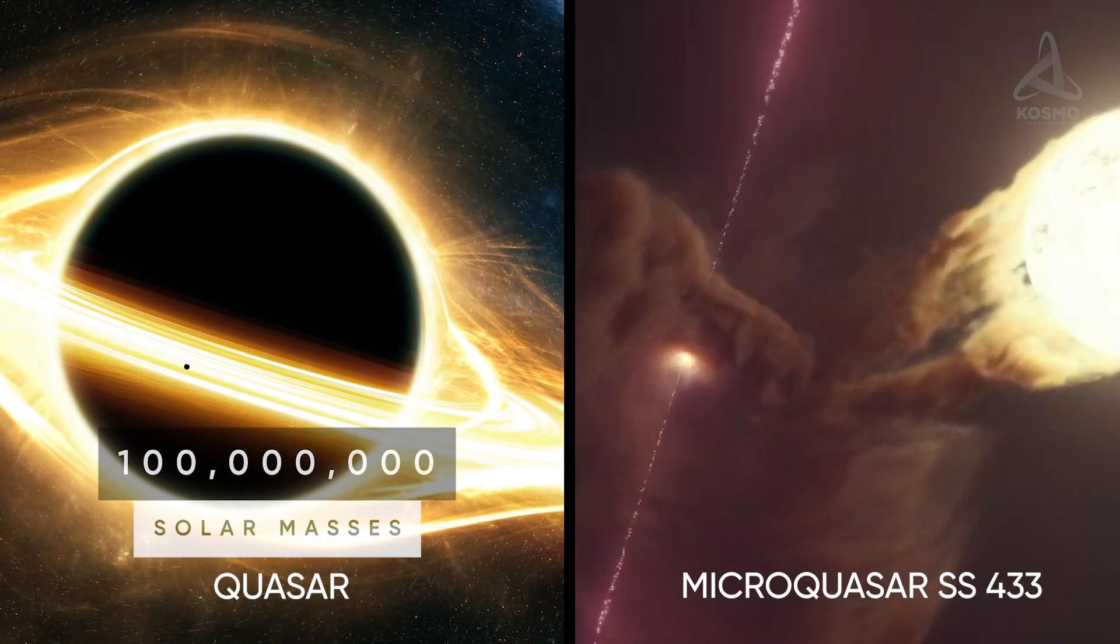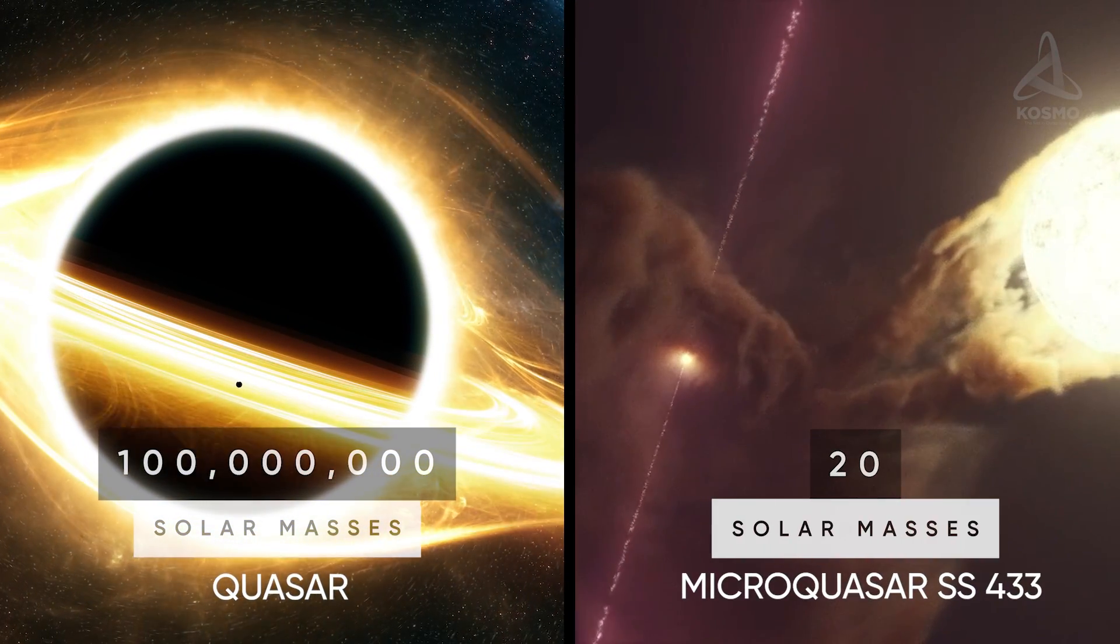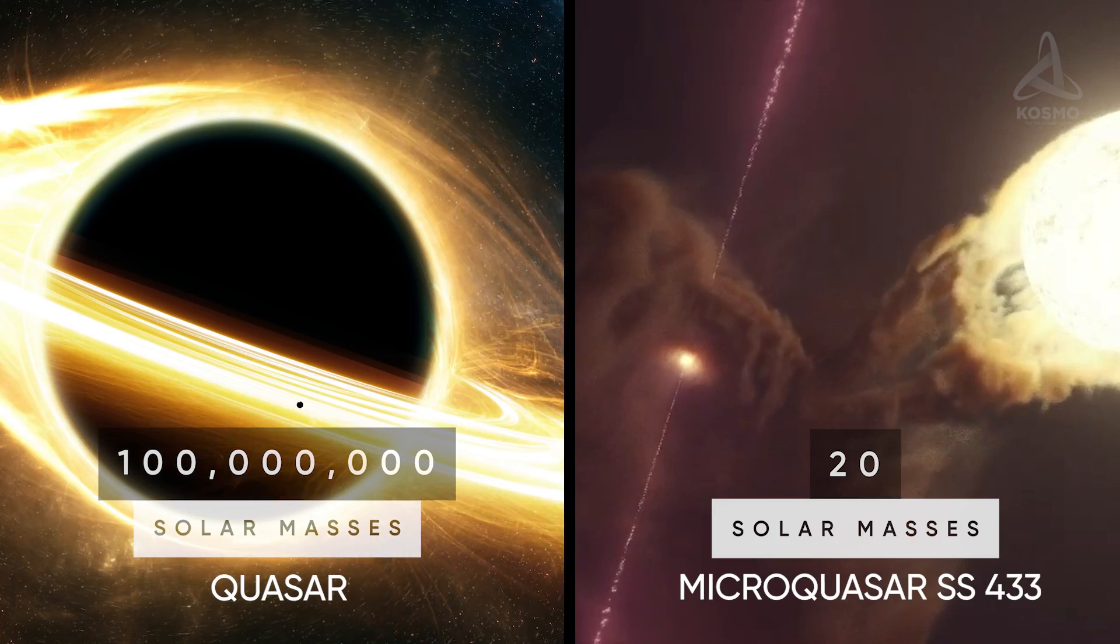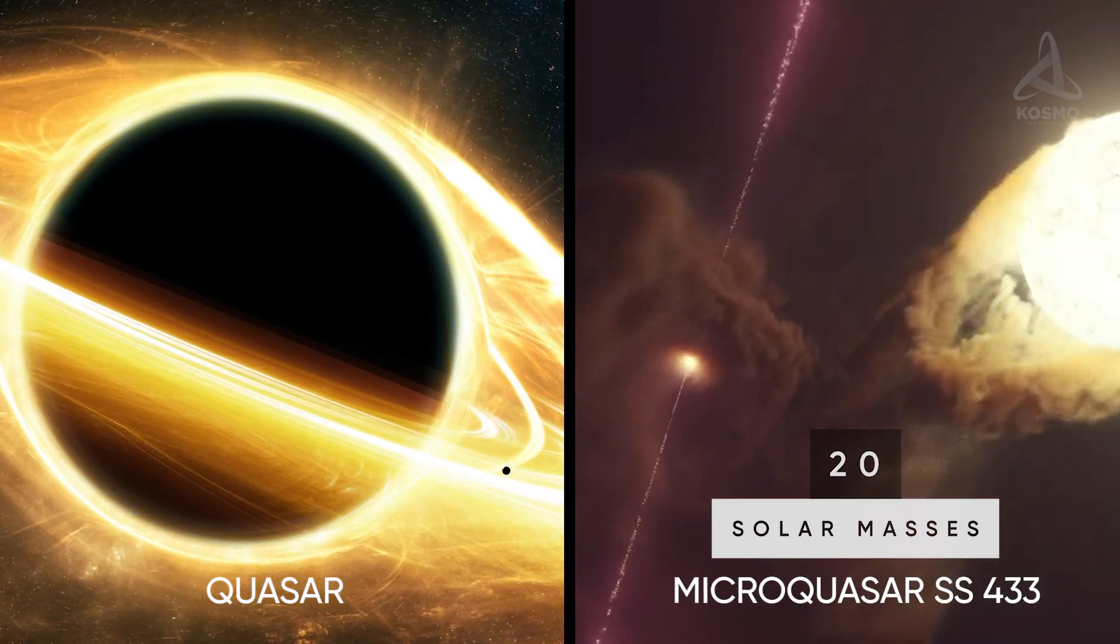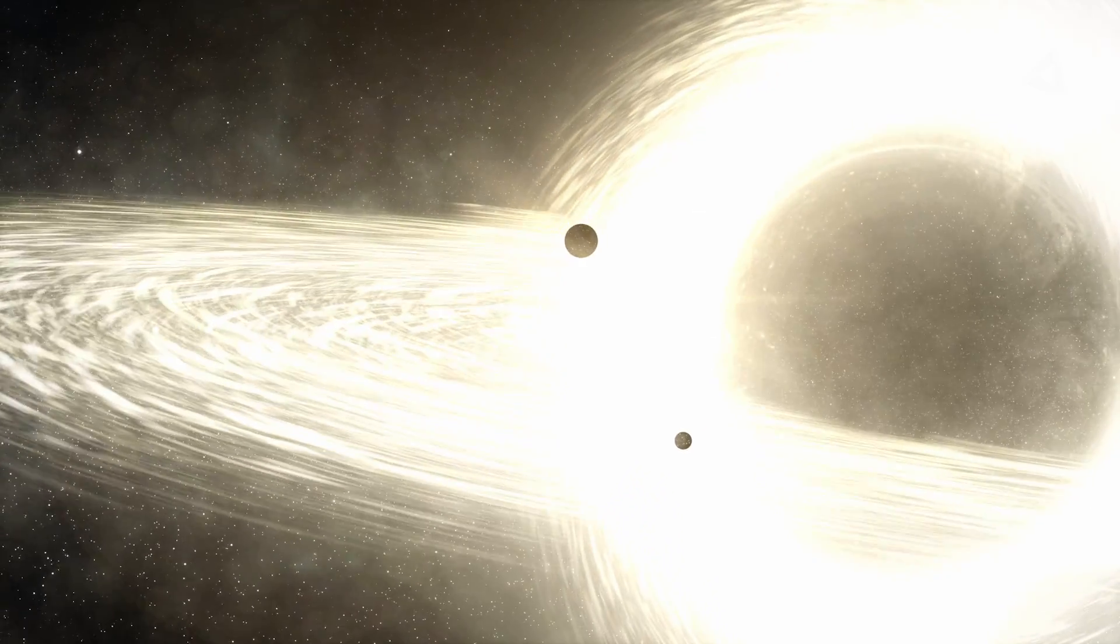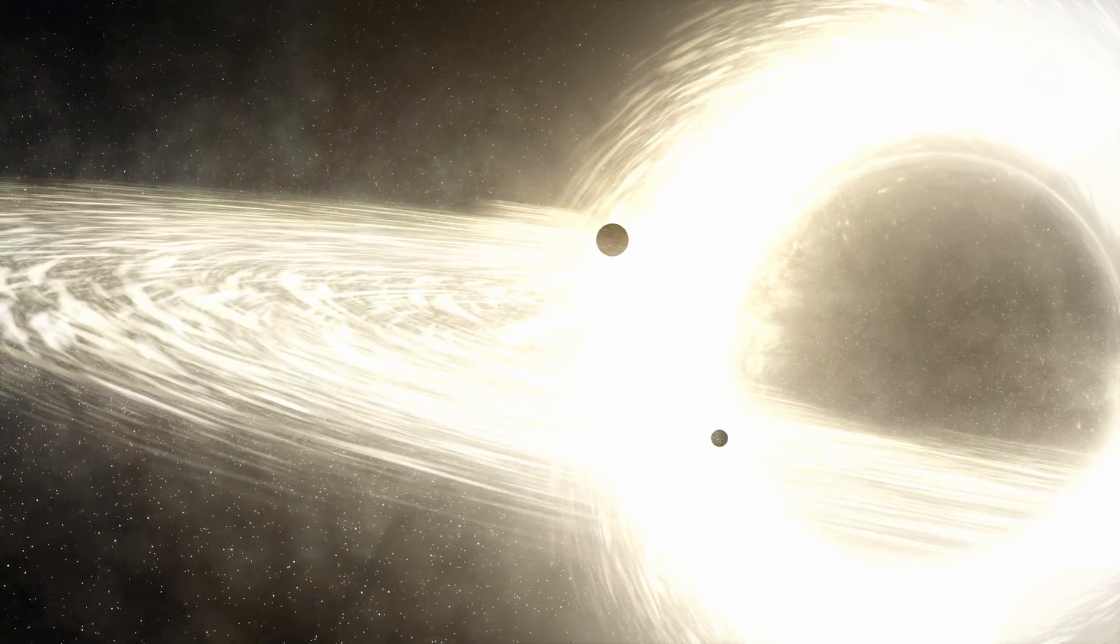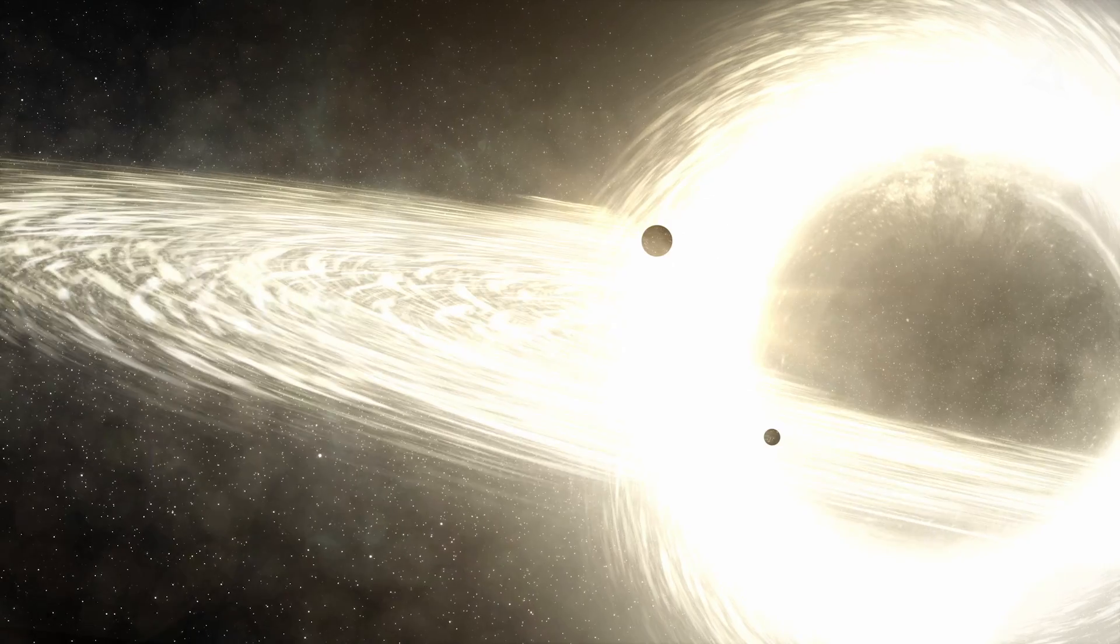As for the mass of the black hole likely to be found in the center of SS433, it must be just a few dozen solar masses. The accretion disk of a microquasar is intensely luminescent, with emissions in the optical and x-ray bands.